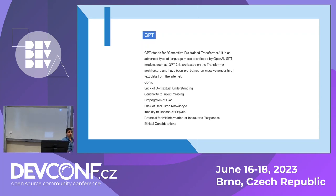Ethical considerations: whatever we are adding to it is getting uploaded to the OpenAI cloud, which has all the data we are adding. It's an ethical consideration because we are adding sensitive information at times, and it becomes very difficult to understand where that information came from. Hackers could use it if they have access to the cloud.